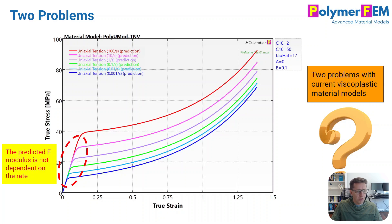Well, the first problem is related to the Young's modulus not depending on the strain rate. In real experimental materials, sometimes the Young's modulus is relatively strongly dependent on the strain rate and that's something that's surprisingly hard to do using a viscoplastic material model.